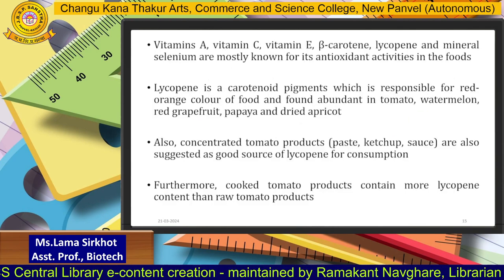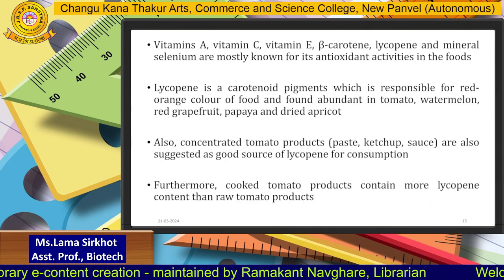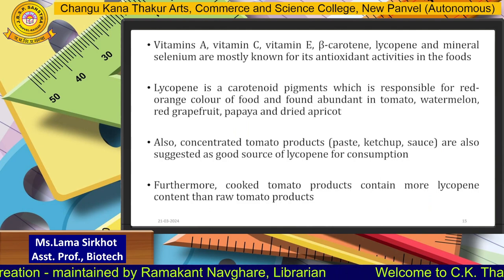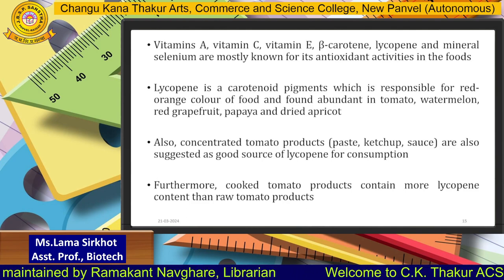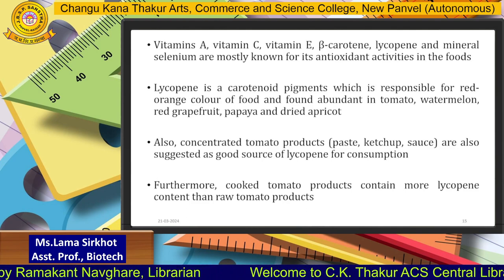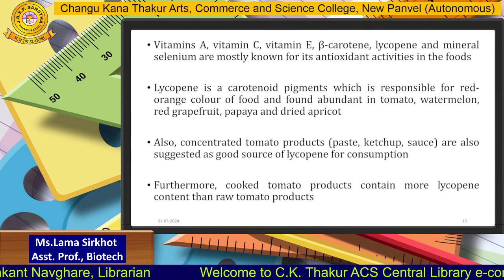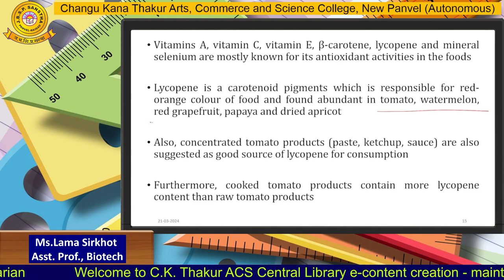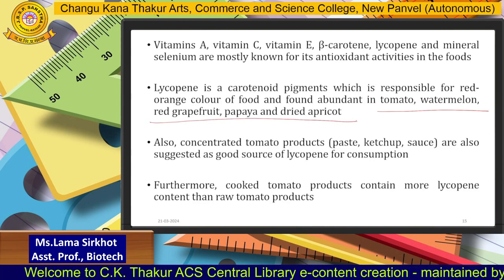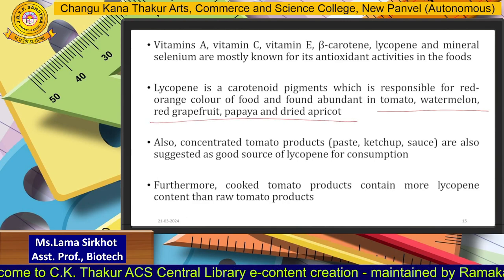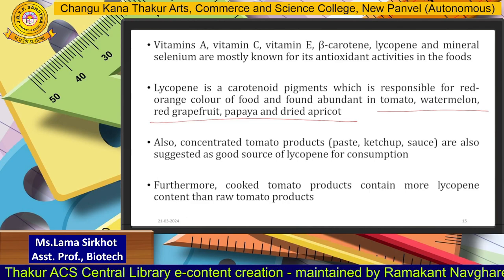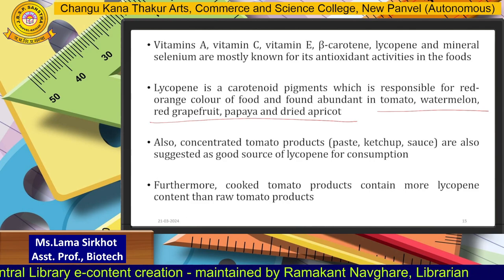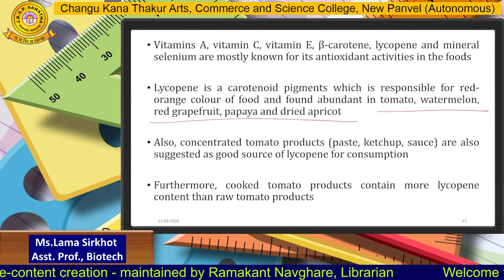Vitamin A, Vitamin E, beta-carotene, lycopene, and the mineral selenium are mostly known for their antioxidant properties. Lycopene is a carotenoid pigment responsible for the red-orange color of food and is most abundantly found in tomatoes, watermelon, red grapefruit, papaya, and dried apricot. Concentrated tomato products such as tomato paste, ketchup, and sauces are also suggested as a good source of lycopene.